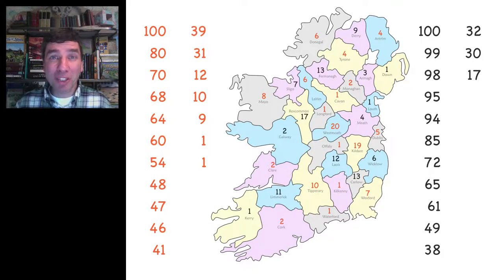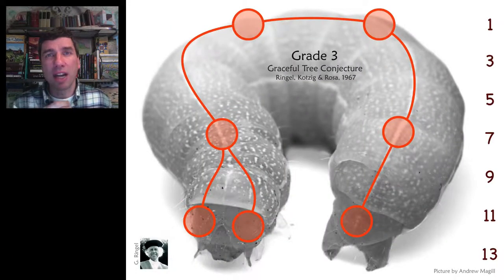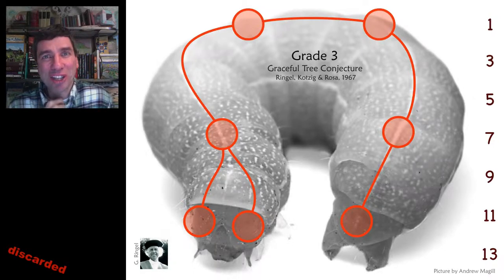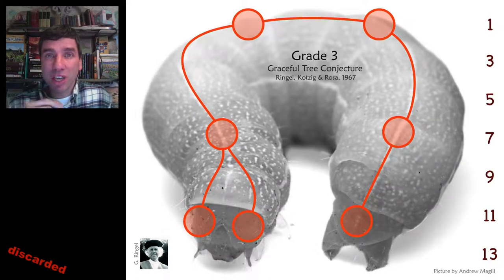Now, which problem did this replace? It sadly replaced one of the great unsolved problems that I think is out there — the graceful tree conjecture. I'm very glad that we have Aggression, but the graceful tree conjecture is an absolute beauty.